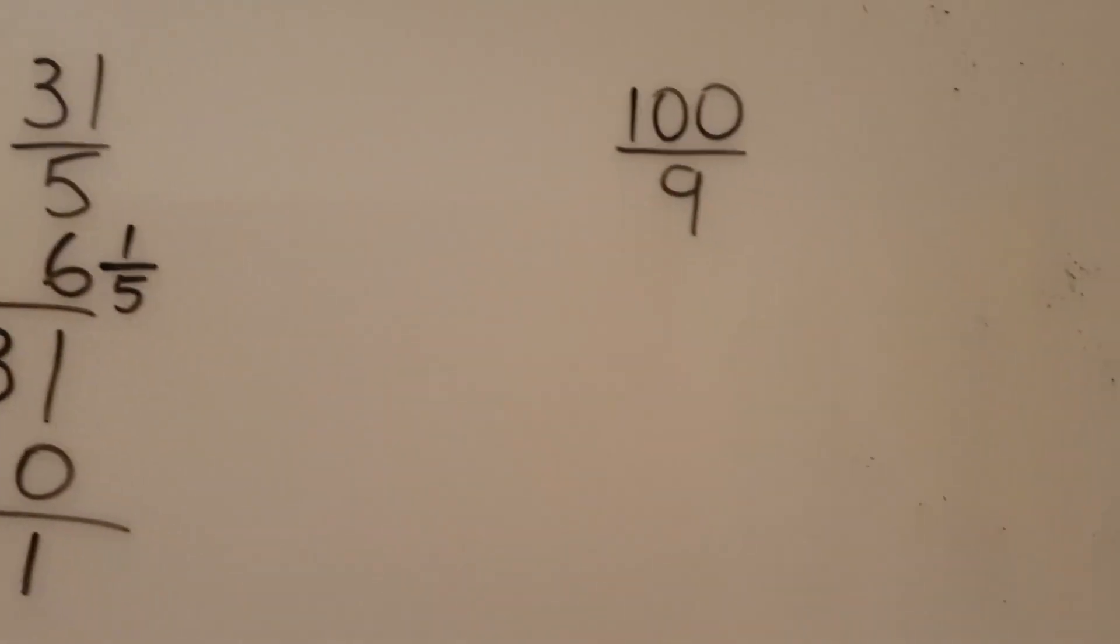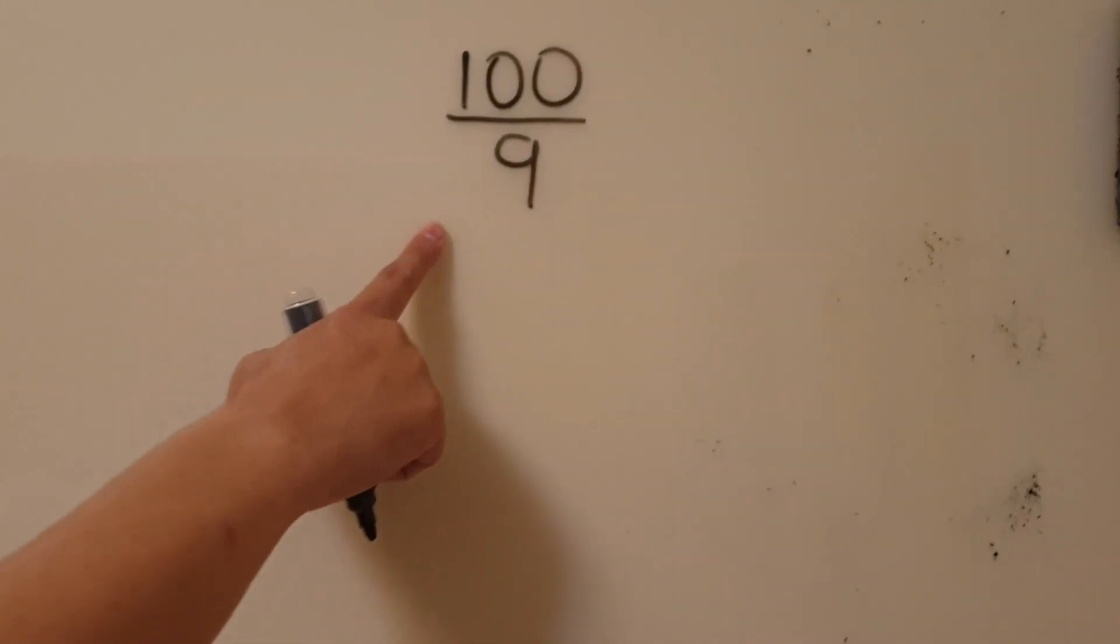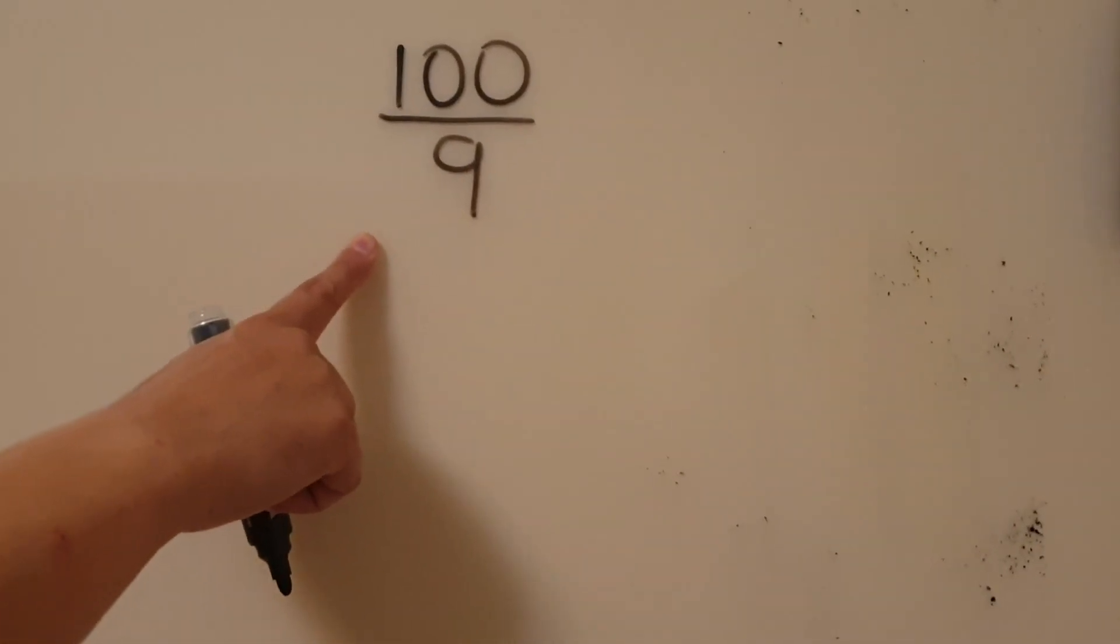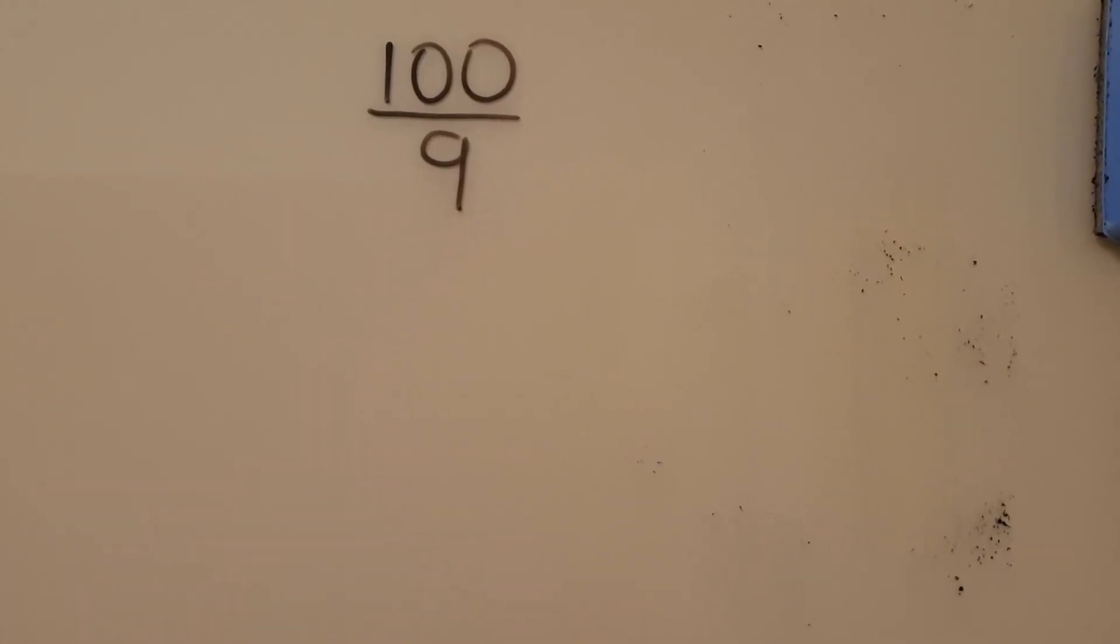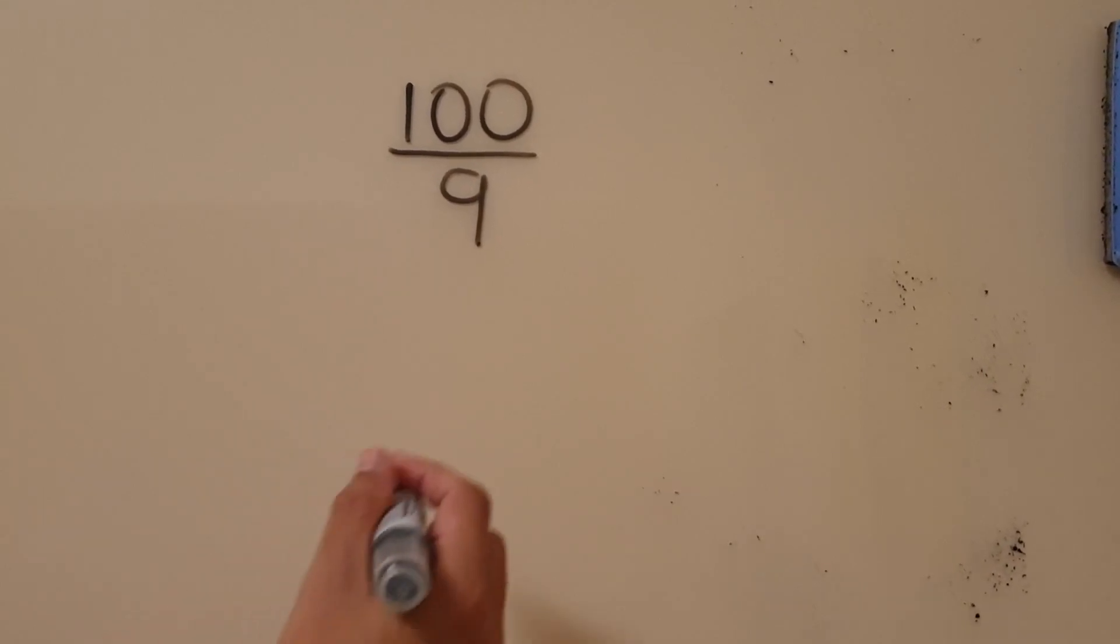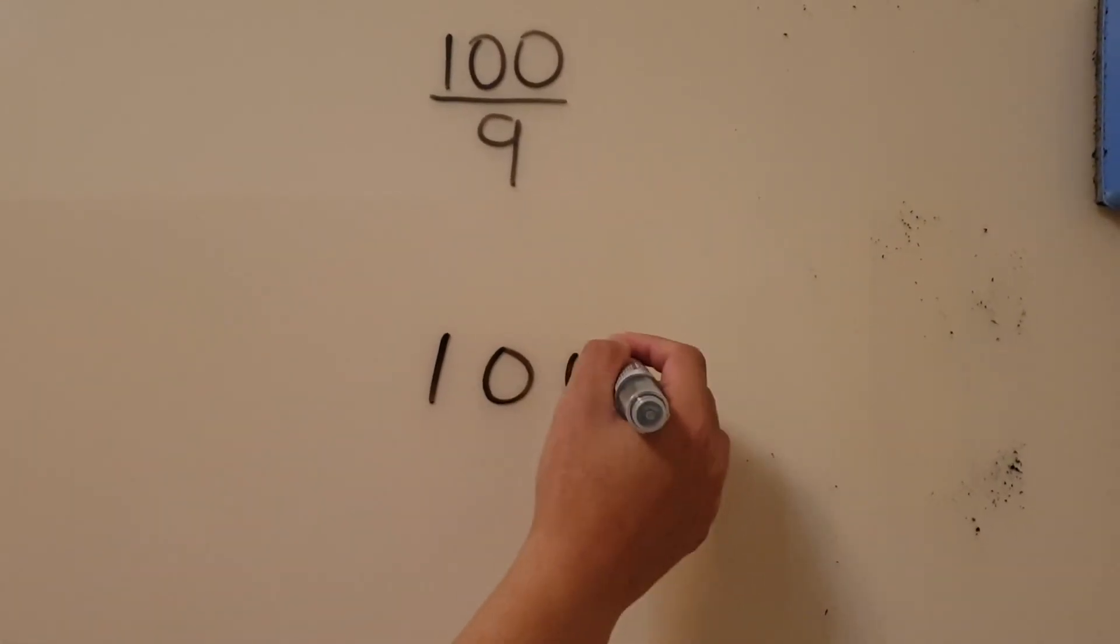Let's look at the last example: 100 out of 9, or 100 ninths. So again, you're not going to draw the model for this as it's a little too long. Let's use the long division method to check the conversion.